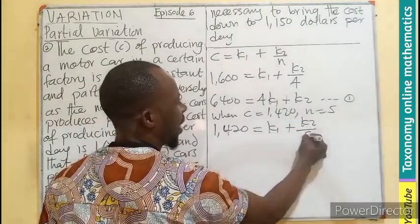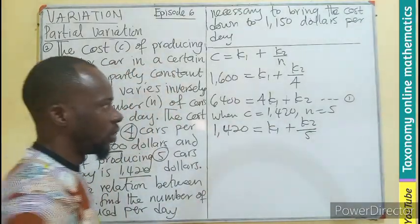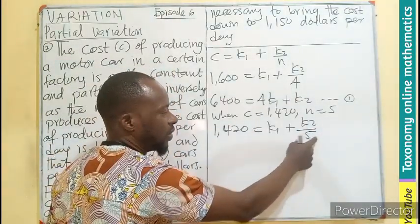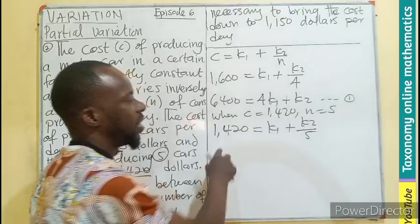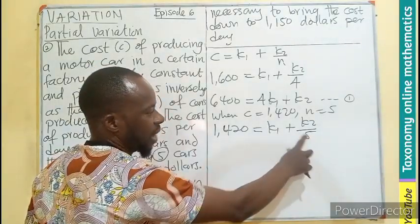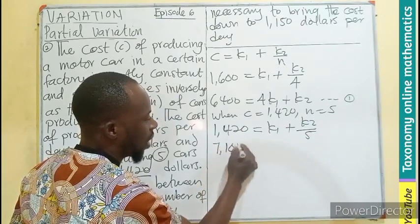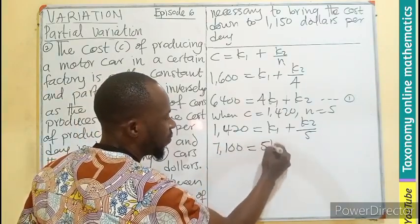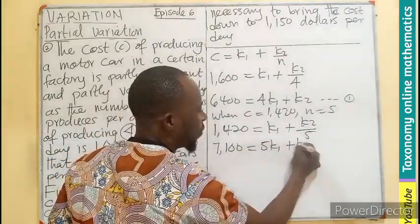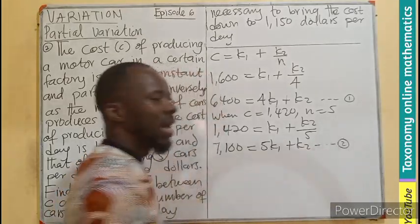Then K2 divided by 5. Similarly, we need to multiply by the LCM, 5 here, 5 here, 5 here. If I multiply, we have 7,100. Here will be 5K1 and we have K2, our second equation.